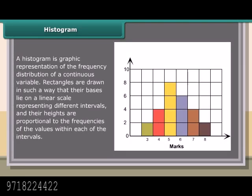Histogram: A histogram is graphic representation of the frequency distribution of a continuous variable. Rectangles are drawn in such a way that their bases lie on a linear scale representing different intervals and their heights are proportional to the frequency of the values within each of the intervals.